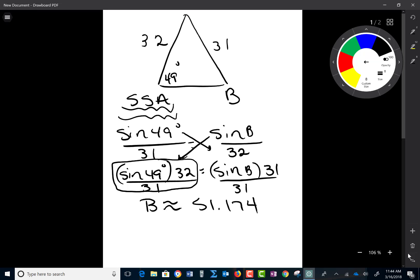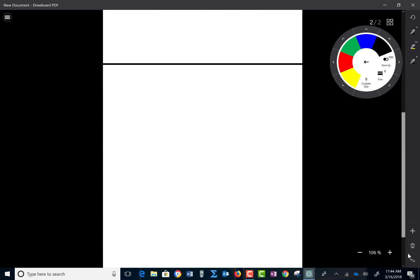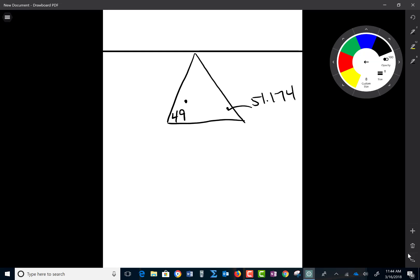Now, what you have to check is you have to see if that's the only option for B. And since this could be an ambiguous case and A is 49, if B is the 51.174, then the other angle, if I add 49 plus 51.174 and subtract that from 180, I get 79.826 for the third angle.